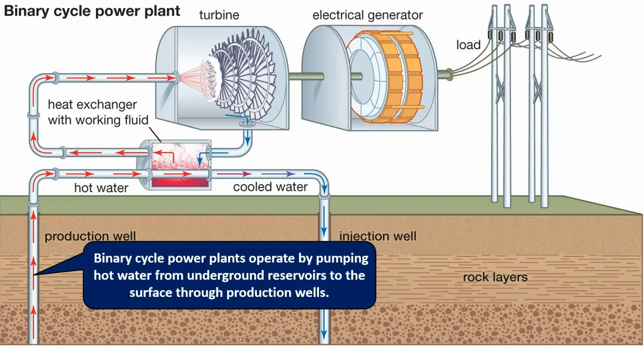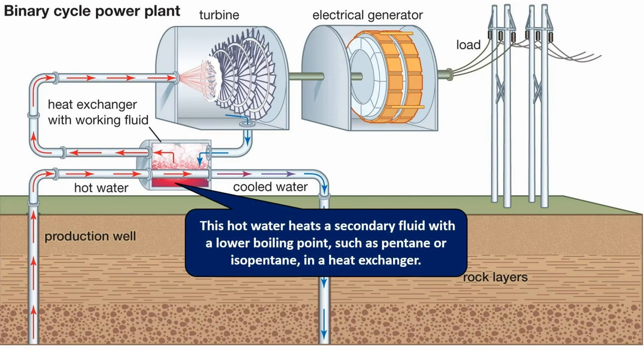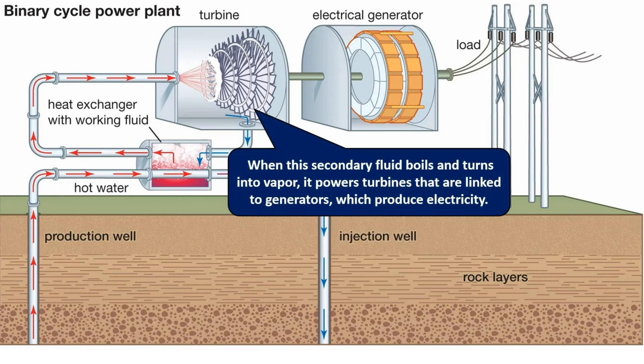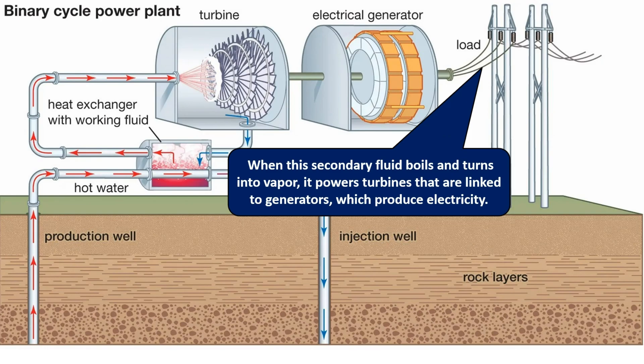Binary cycle power plants operate by pumping hot water from underground reservoirs to the surface through production wells. This hot water heats a secondary fluid with a lower boiling point, such as pentane or isobutane, in a heat exchanger. When this secondary fluid boils and turns into vapor, it powers turbines that are linked to generators, which produce electricity.